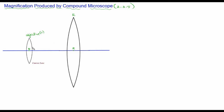The major difference between these two lenses is their focal length. The objective lens focal length should be lesser compared to the eyepiece focal length, because the objective lens has to focus the object placed very close to it. The object is placed on the left side of the objective lens, and through the eyepiece on the right side you can observe the final image.